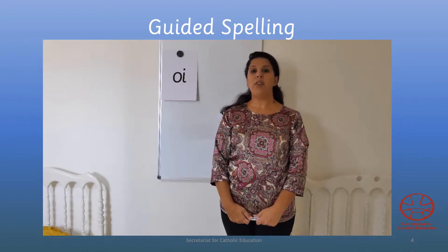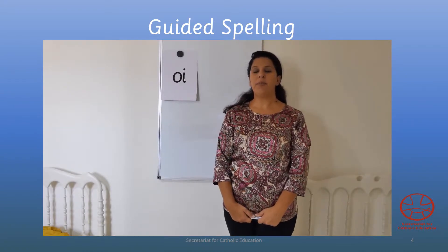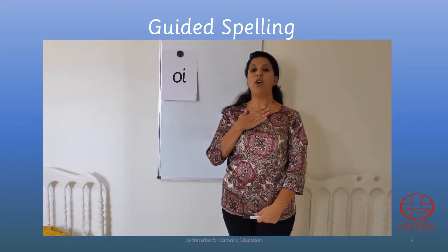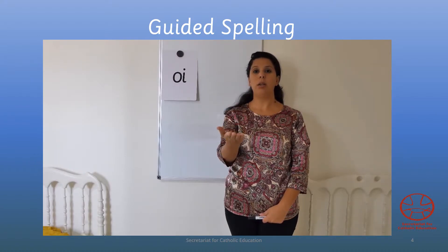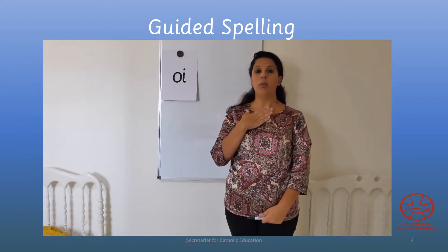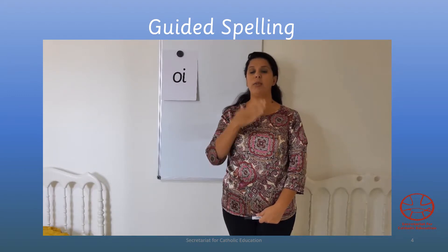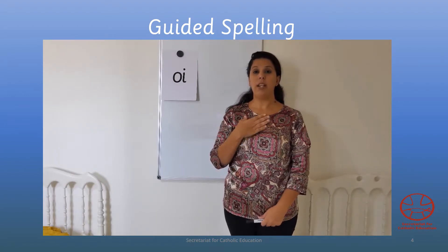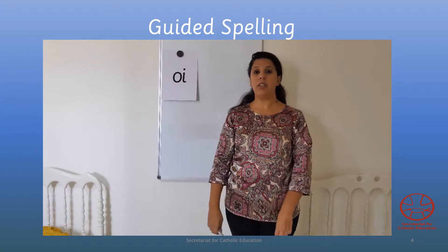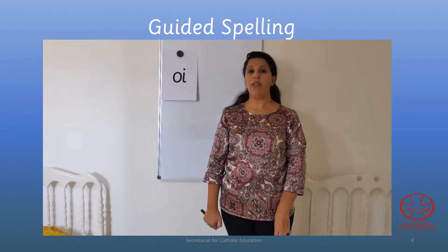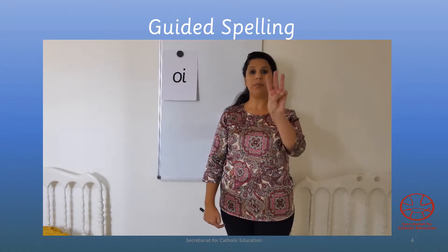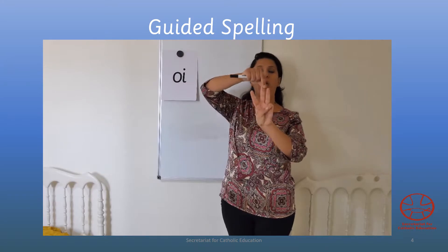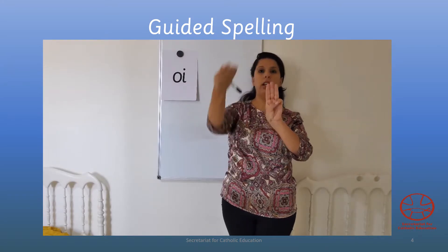I'm ready to spell our first word. The first word is 'boy'. Boy — three sounds. Spell it on our fingers. You're going to show me three fingers: B, oi, l. Boy.